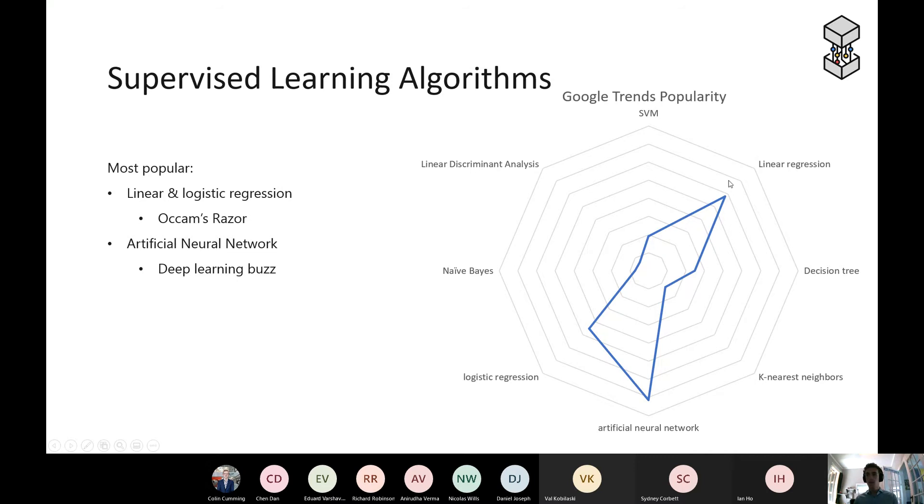You can see two hot spots. Can you see my mouse cursor? Oh, I can use a laser pointer. Okay, so you can see linear regression, obviously hugely popular along with logistic regression, which is essentially the same thing but for classification.